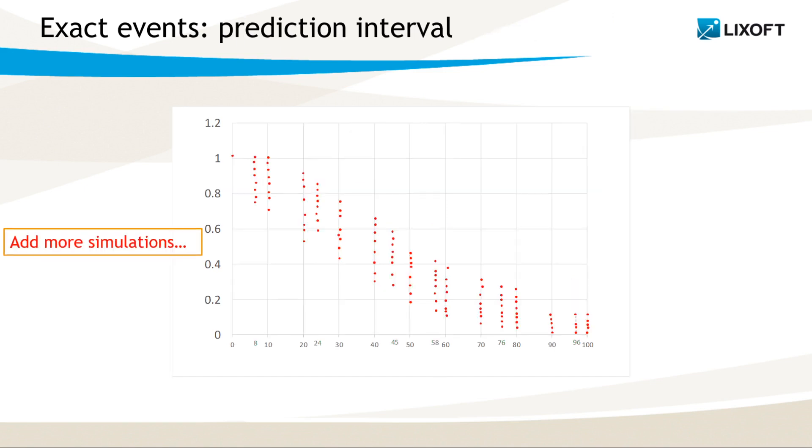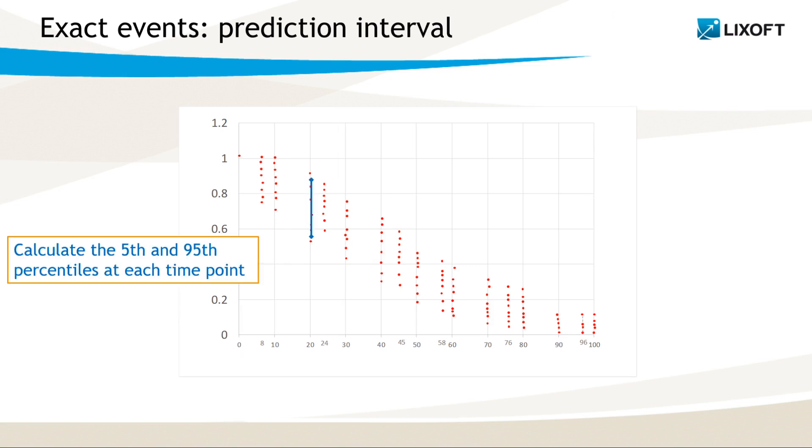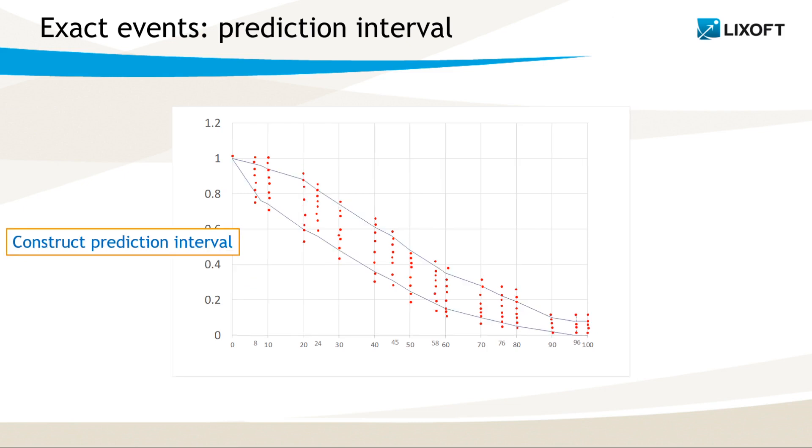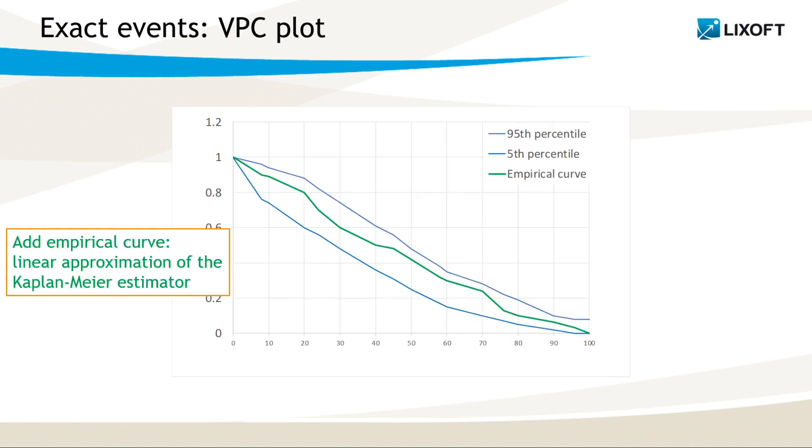Doing the same for 500 simulations, we get at each time point of the grid a set of probabilities that an event occurs after that point. Now, we can easily calculate the 5th and 95th percentile and draw them as a prediction interval. And finally, add empirical curve for comparison.